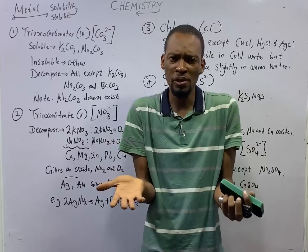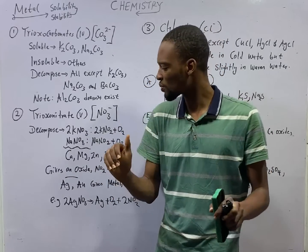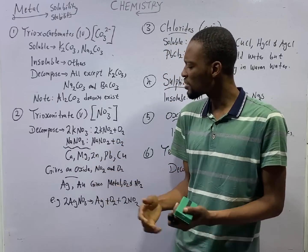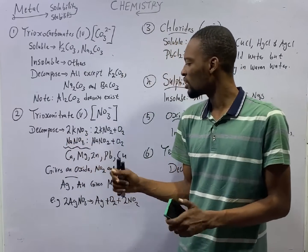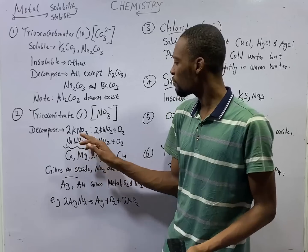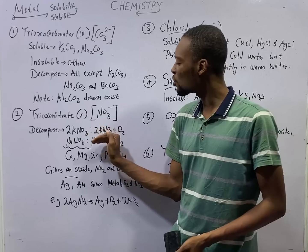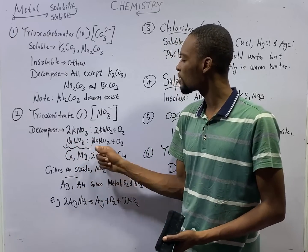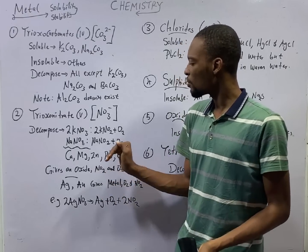In terms of solubility, all trioxonitrate(V) salts are soluble. Now let's look at stability to heat. Trioxonitrate(V) salts also decompose on heating. For potassium and sodium, when heated, they form dioxonitrate and oxygen is given up. That is, KNO3 decomposes to form KNO2 and oxygen. Similarly, sodium trioxonitrate decomposes to form NaNO2 and oxygen.